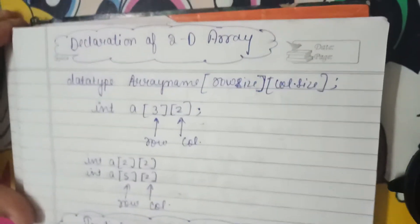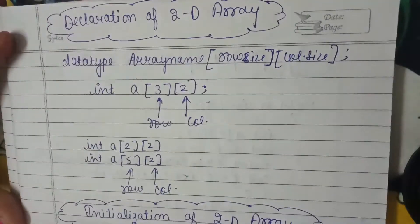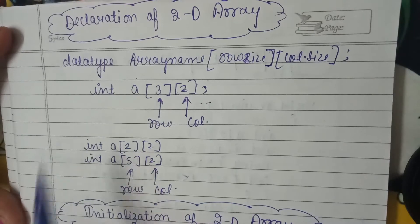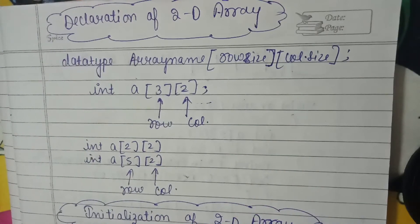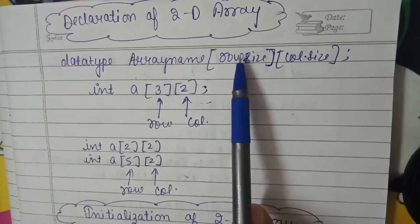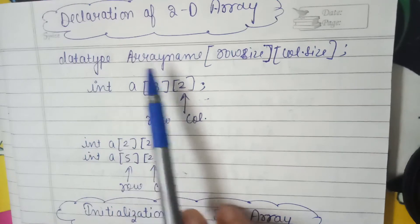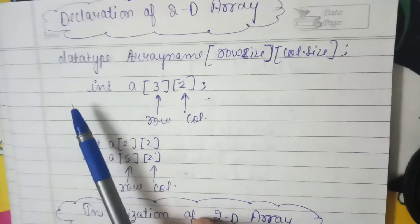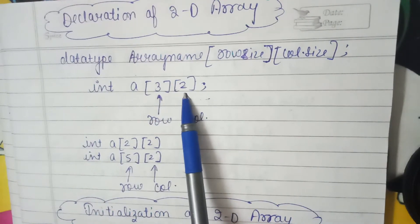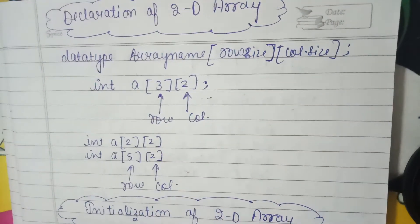2D array is declared same as one-dimensional array is declared. The difference is that in 1D we have simple size of array, but in 2D we have both row size and column size. Like first data type, then array name, then row size and column size. Like int a[3][2] - three will be the row size, two will be the column size. This is the way we declare a two-dimensional array.